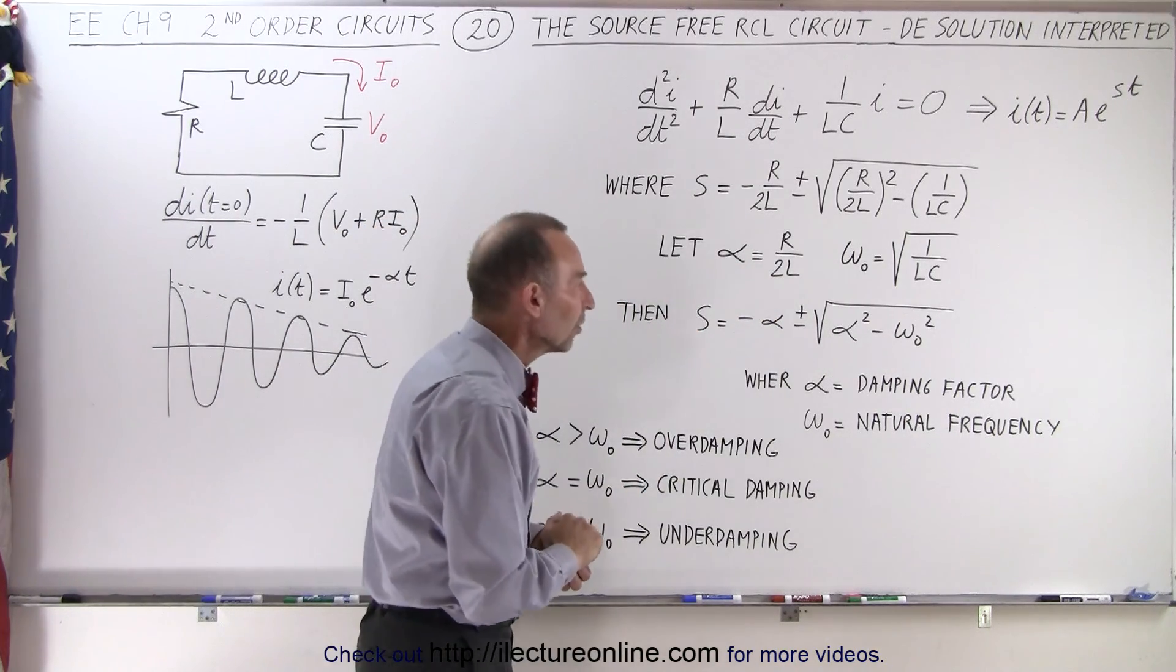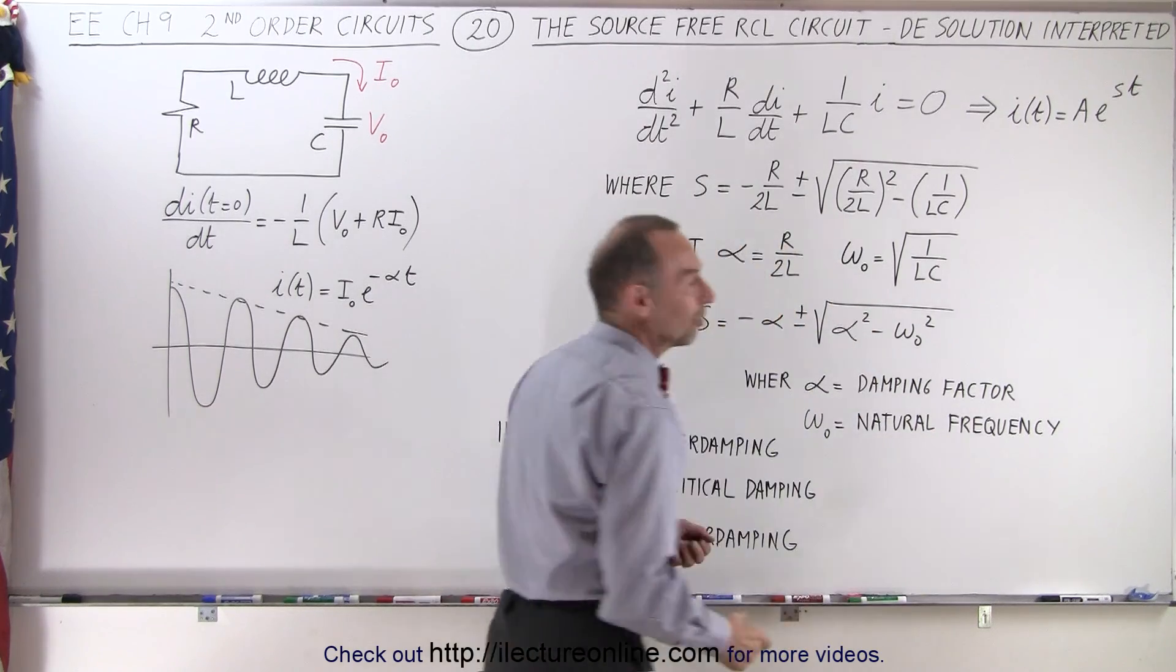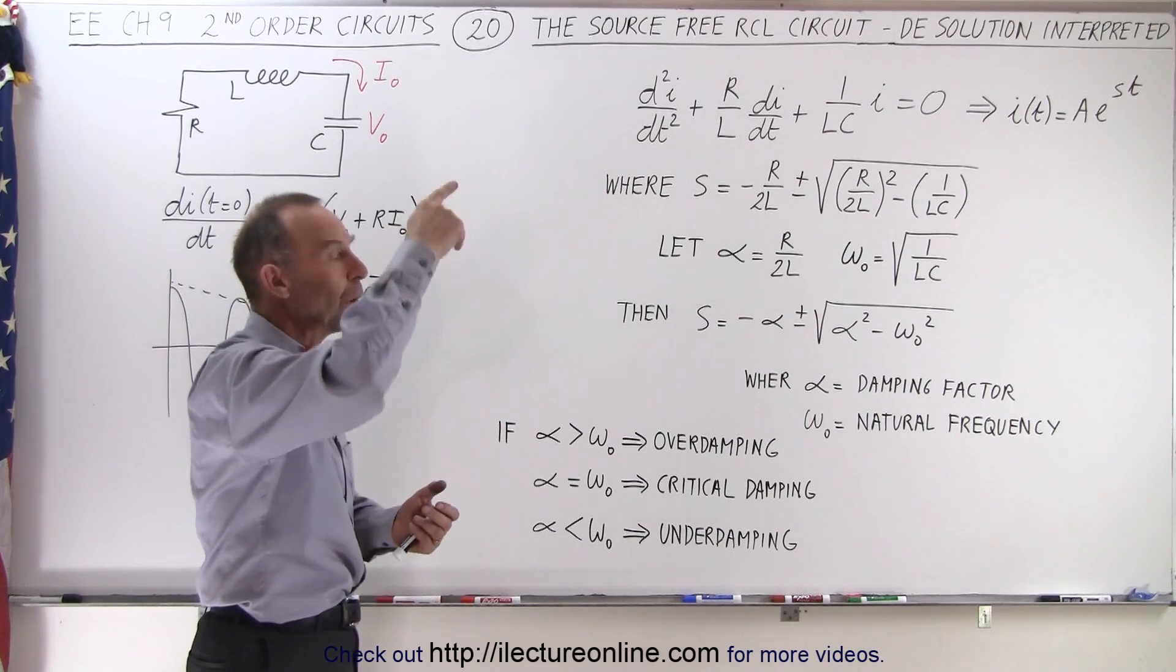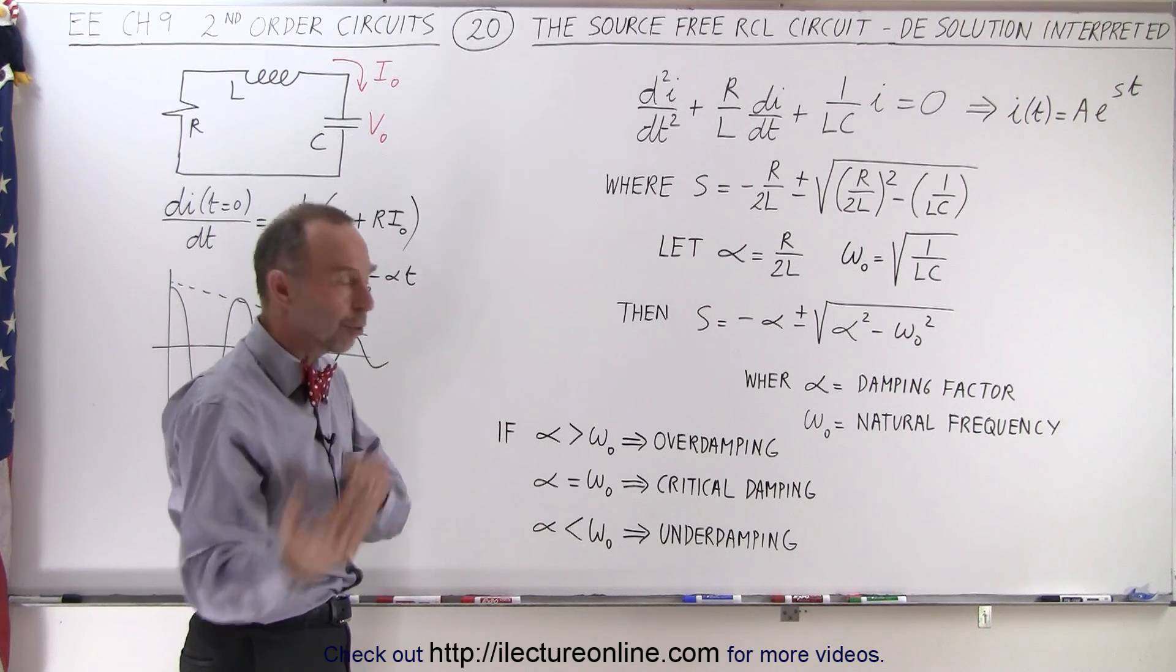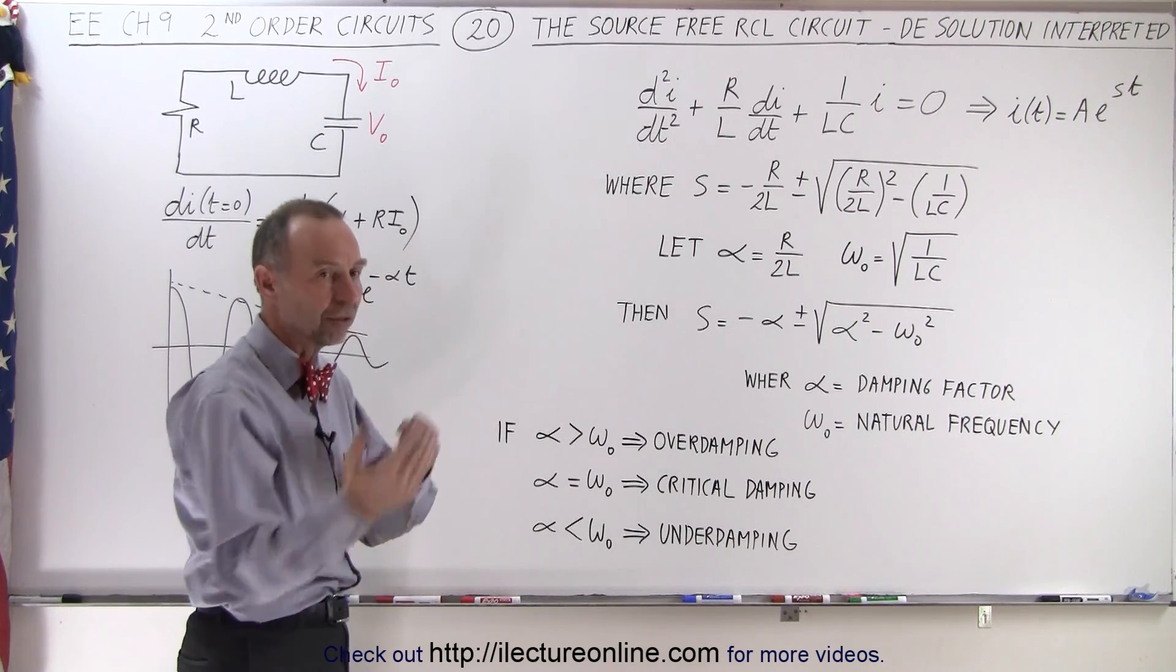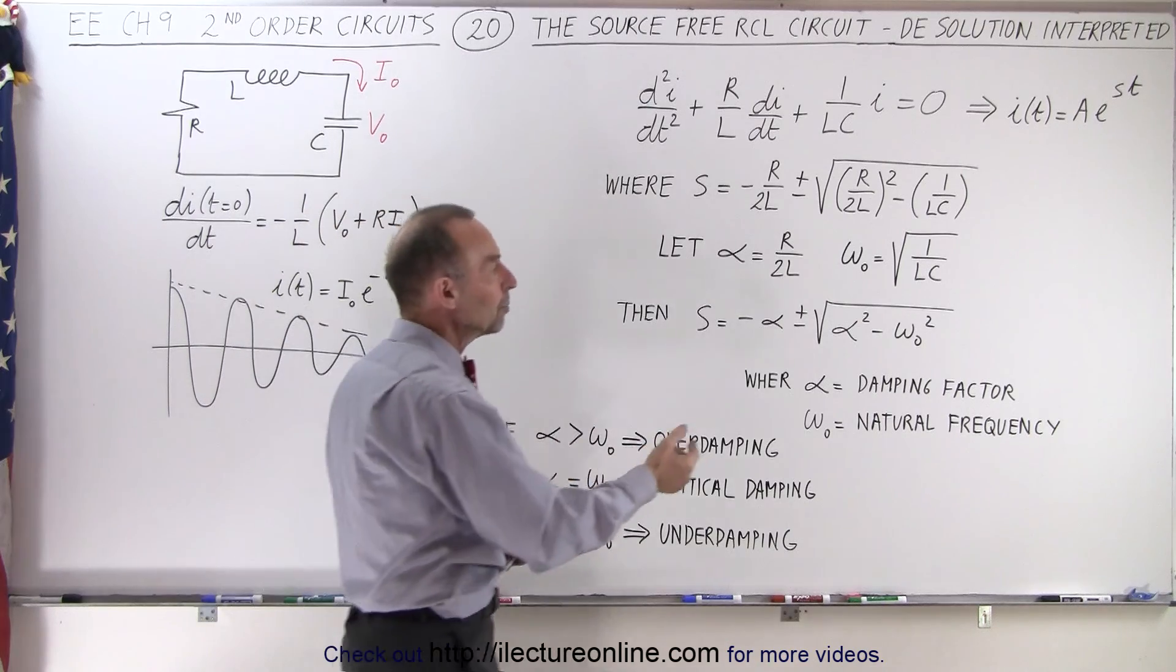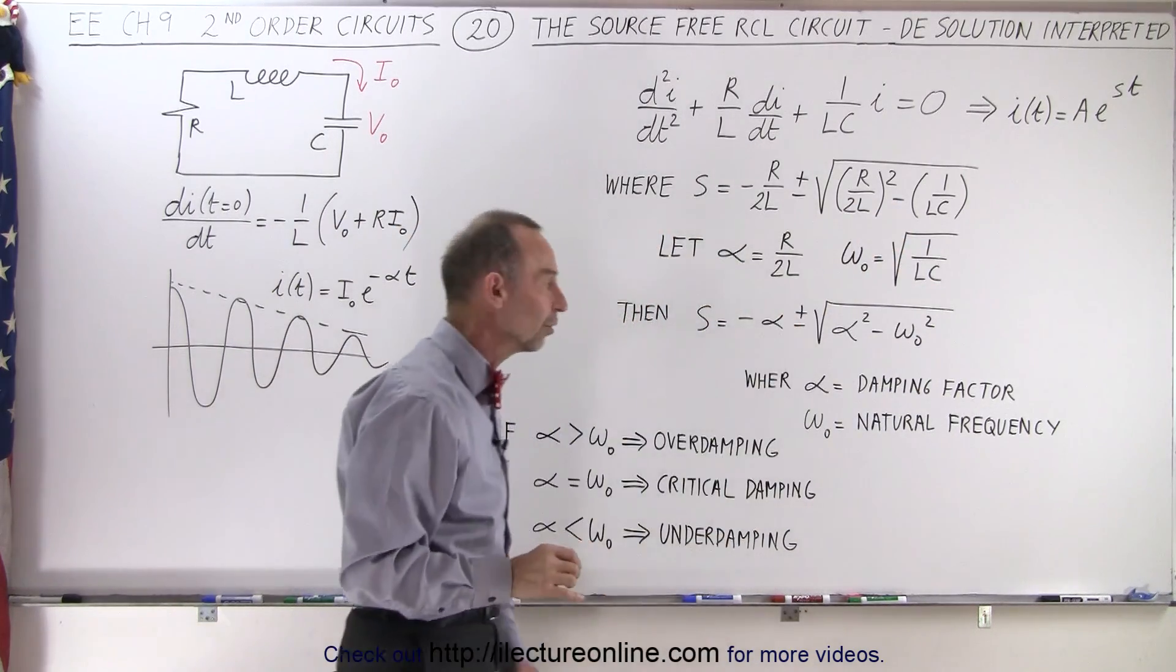The second one, omega sub-naught, is called the natural frequency of the system. If there was no damping at all, omega sub-naught would simply be 1 over LC, which means energy would just freely go back and forth between the inductor and the capacitor forever if there was no resistor, and so that would be the natural frequency of the system without a resistor in the circuit.